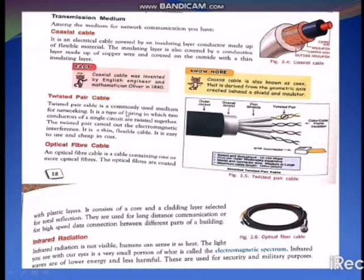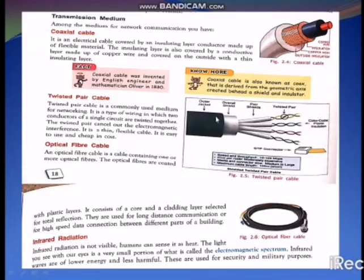Next one is the twisted pair cable. It is a commonly used medium for networking and it is very easy to use and cheap in cost. It is a type of wiring in which two conductors of a single circuit are twisted together. The twisted pair cancels out electromagnetic interference. So it is a thin, flexible cable used for network communication.